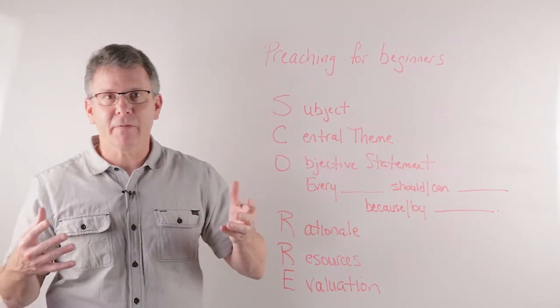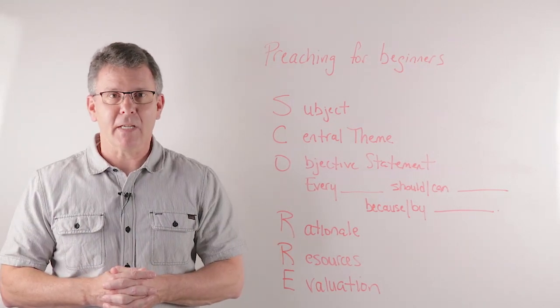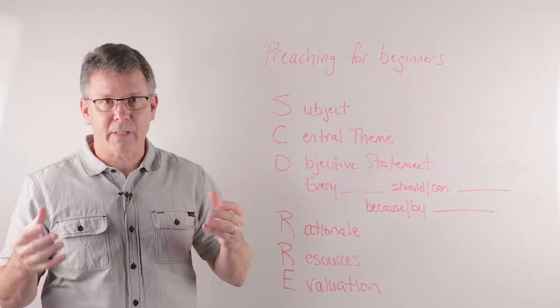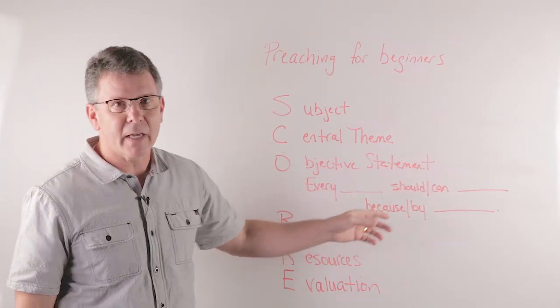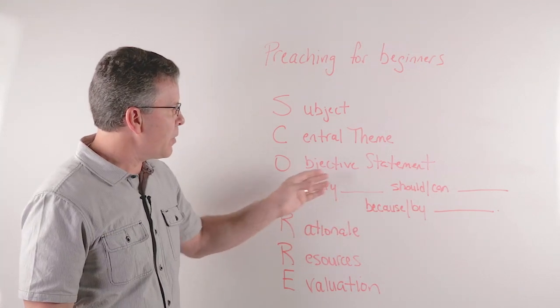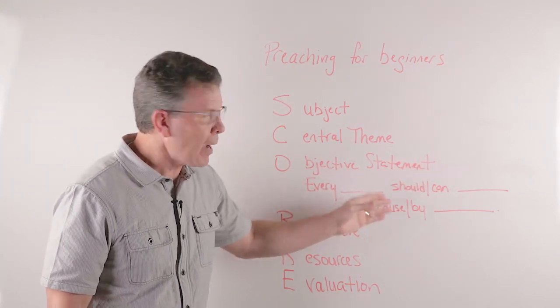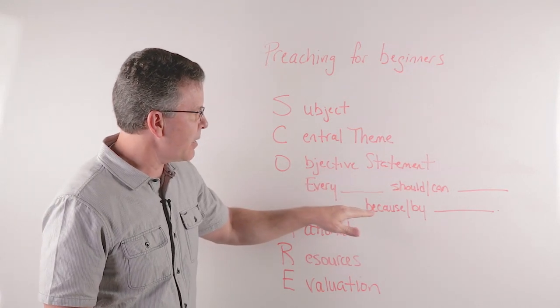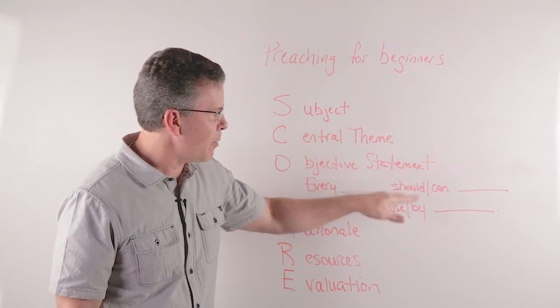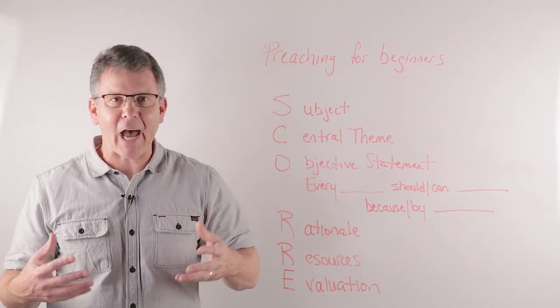Then I would create an Objective Statement. Using evangelism as an example: every Christian should share their faith because, or every Christian can share their faith by. If it's a should-because, you're telling them why. If it's a can-by, you're telling them how.